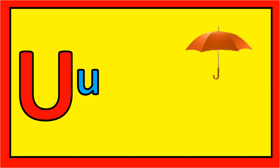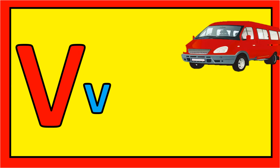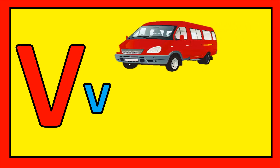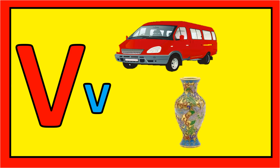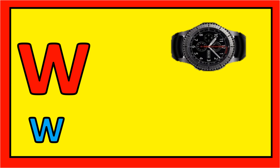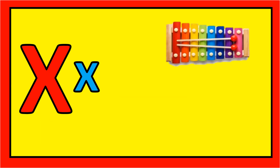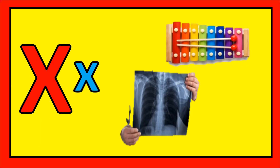U for umbrella, U for uniform, V for van, V for vase, W for watch, W for woman, X for xylophone, X for x-ray.